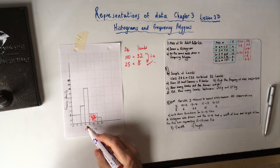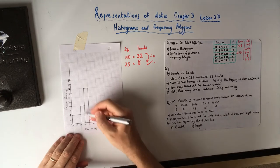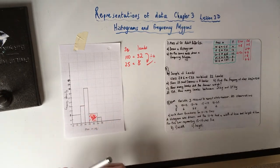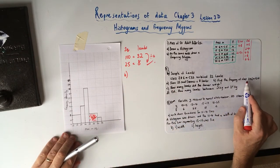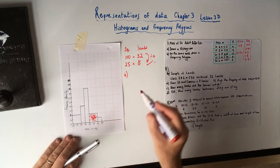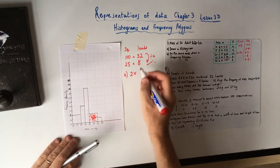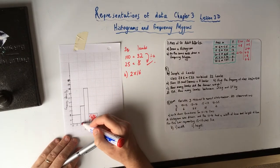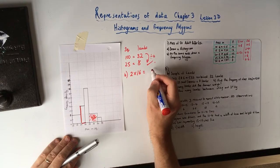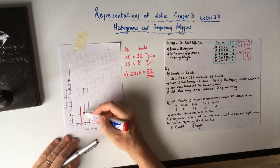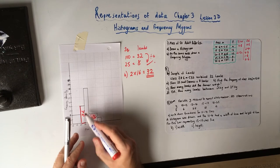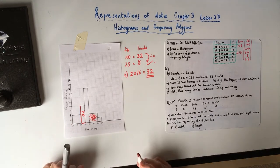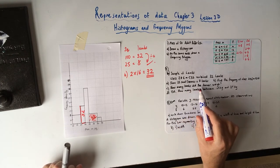Part b asks for the frequency of the 24 to 26 class. That class has a width of 2 and from the scale it has a height of 16. So area = 2 times 16 = 32. Interestingly, this bar and the 28-to-32 bar both have an area of 32, so they contain the same number of lambs despite being different shapes. Part c asks how many lambs the farmer weighed in total.